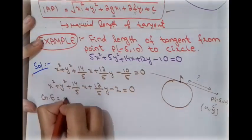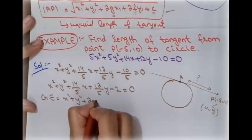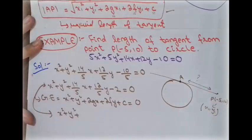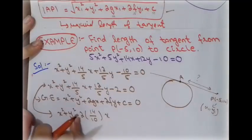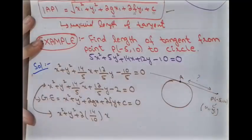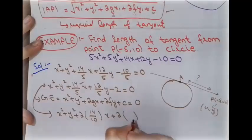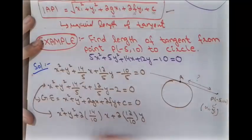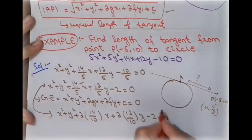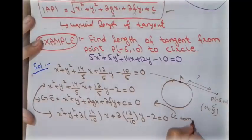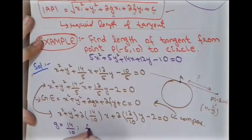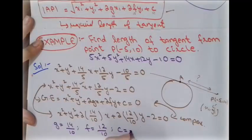Comparing the equation x² + y² + (14/5)x + (12/5)y − 2 = 0 with x² + y² + 2gx + 2fy + c = 0: we get 2g = 14/5 so g = 14/10 = 7/5, and 2f = 12/5 so f = 12/10 = 6/5, and c = −2.